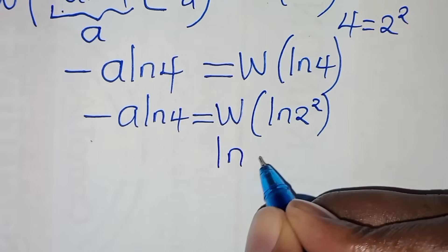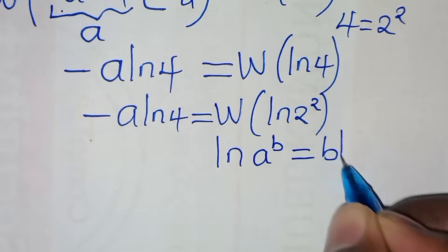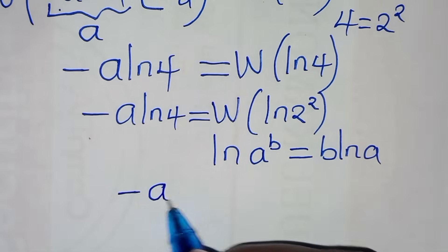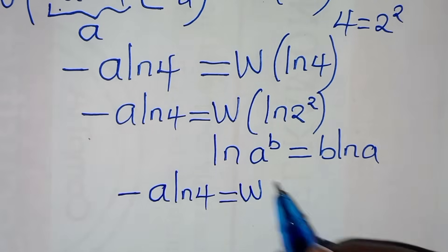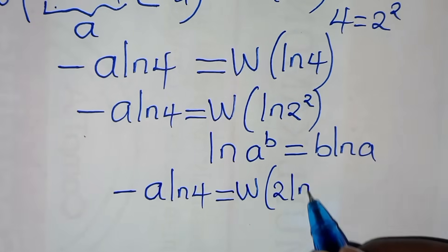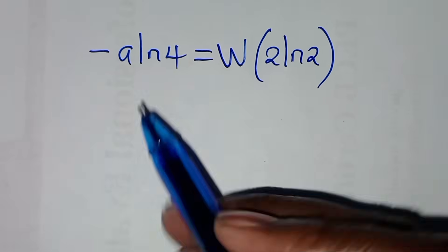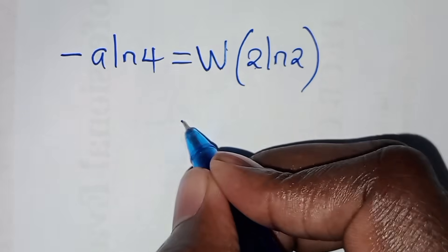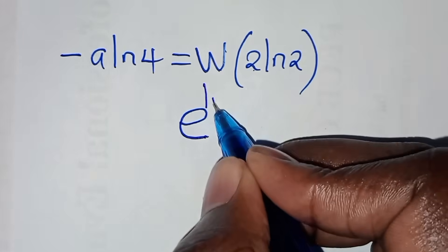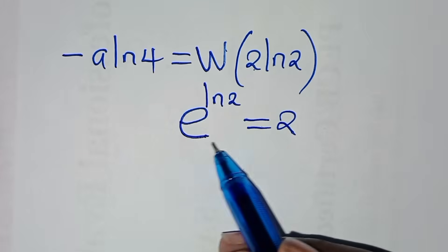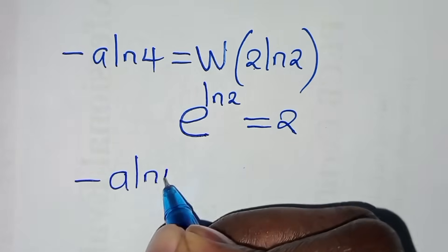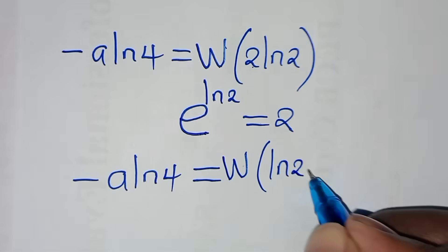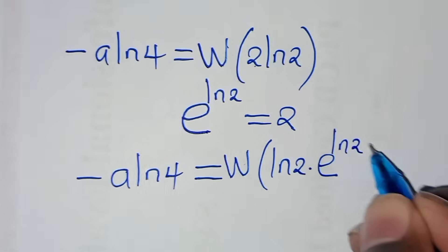So minus a times ln 4 equals W of 2 ln 2. Applying the exponent property that e raised to the power of ln 2 equals 2, and substituting, we get on the left side: minus a ln 4, and on the right side: W of ln 2 times e raised to the power of ln 2, in the parenthesis.